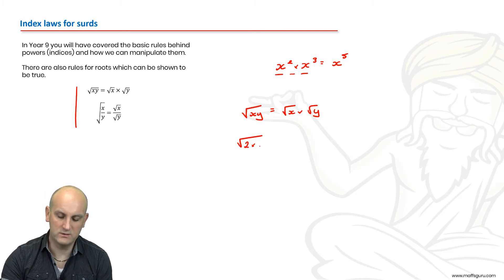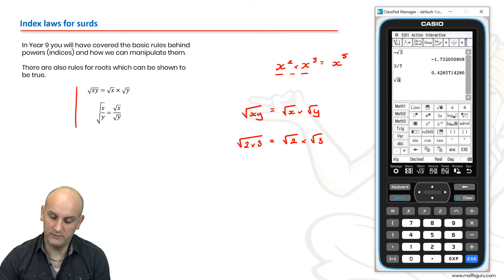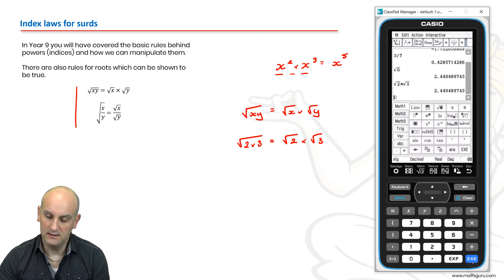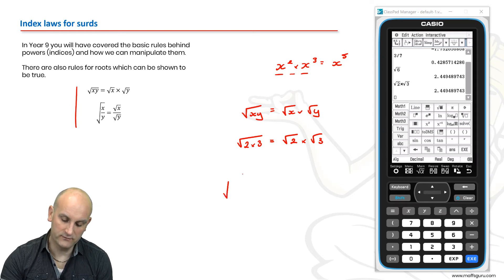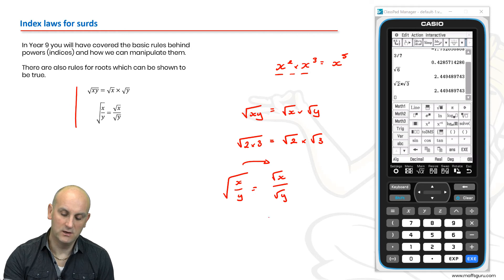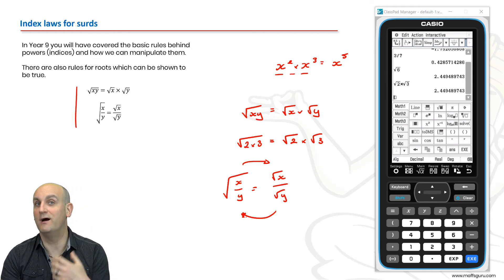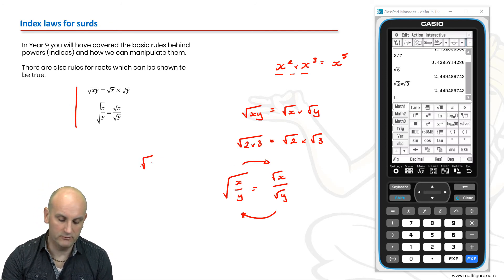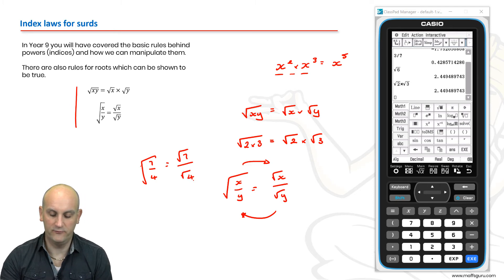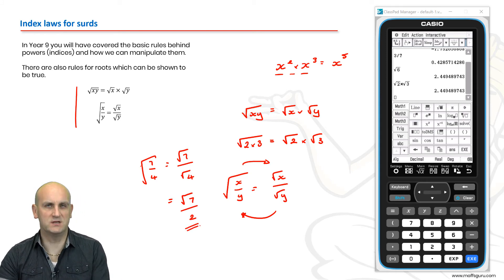We've had index laws before. We know that if we had something like x squared multiplied by x cubed, we get x to the power of 5. Where the base is the same and we are multiplying, we add the powers. Something else you're going to need to know: the root of xy. When I have 2 numbers multiplied together under a square root sign, I can split them up as the square root of x multiplied by the square root of y. For example, if I have the square root of 2 times 3, that's the square root of 2 multiplied by the square root of 3. Let's check that: root of 6, and if I do root of 2 multiplied by root of 3, I get exactly the same value. That's really important. Likewise, the square root of x on y is the same as the square root of x divided by the square root of y. We can split these up. But also remember, what we do forwards we can do backwards.